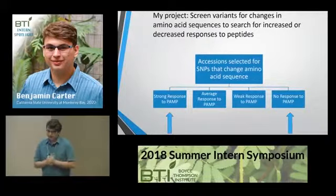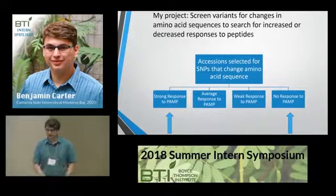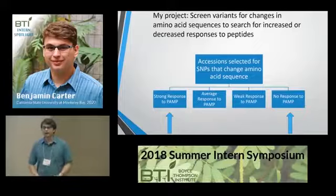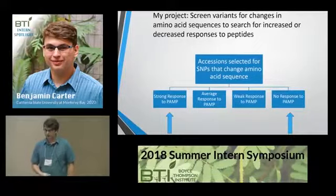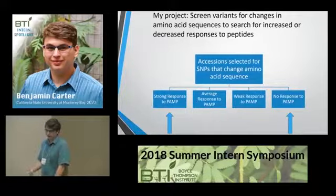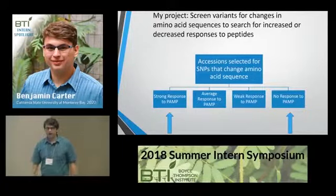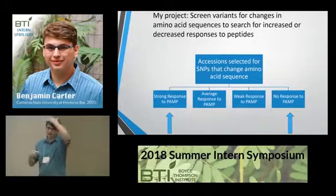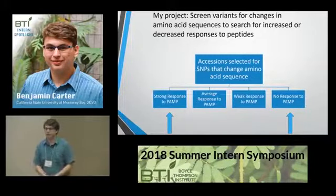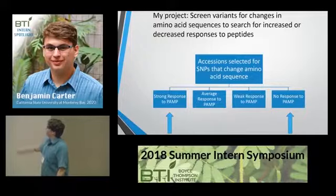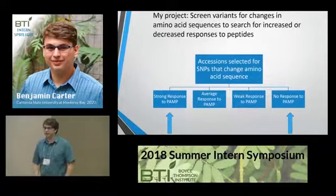We identified natural variants of tomato that have single nucleotide polymorphisms, or SNPs, within the protein's coding regions of DNA that lead to amino acid changes. My project was to systematically screen accessions using the ROS assay to determine whether they have strong, average, weak, or no responses to the PAMP. My hypothesis is that we will identify accessions with differential responses to each PAMP, and of particular interest are ones with strong responses, because these can be bred into tomato lines to increase resistance.